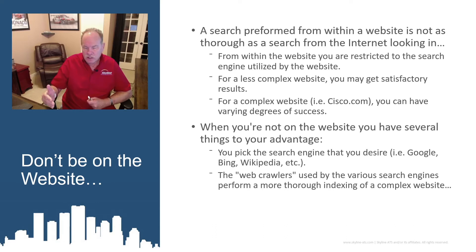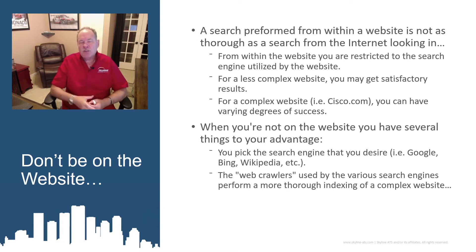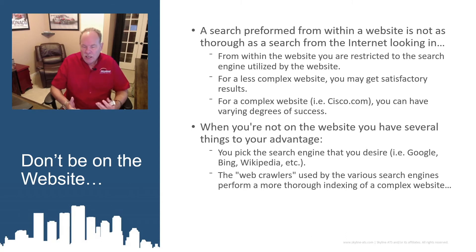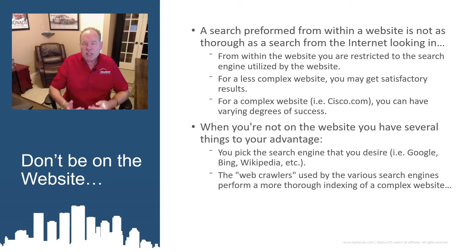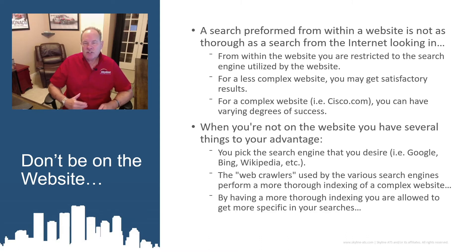Like on cisco.com, web crawlers are finding these less-traveled areas of the website and indexing them so that they have a better, more complete view. It sounds odd, but the external search engine has an even better complete view from the outside looking in than the site's own built-in search engine. By having that indexing, you can get more complex and specific in your searches.